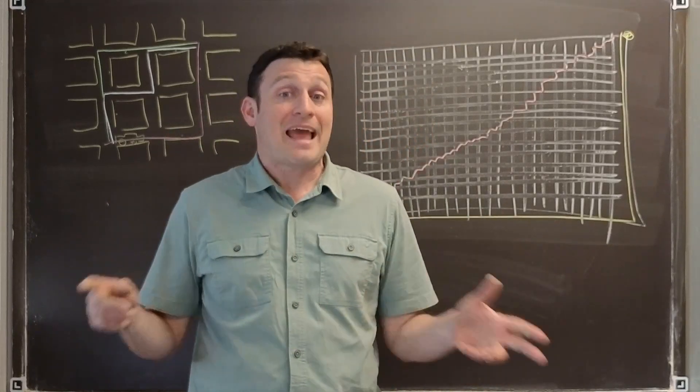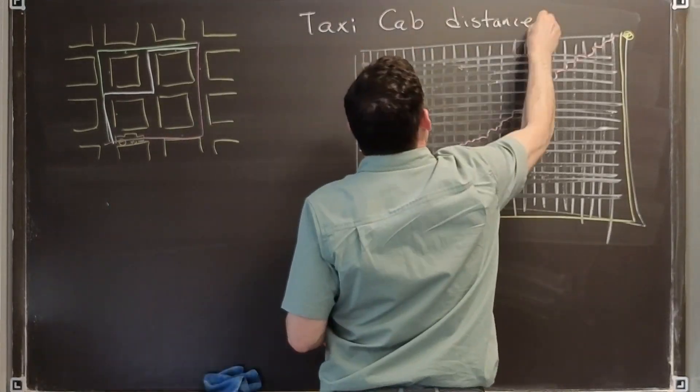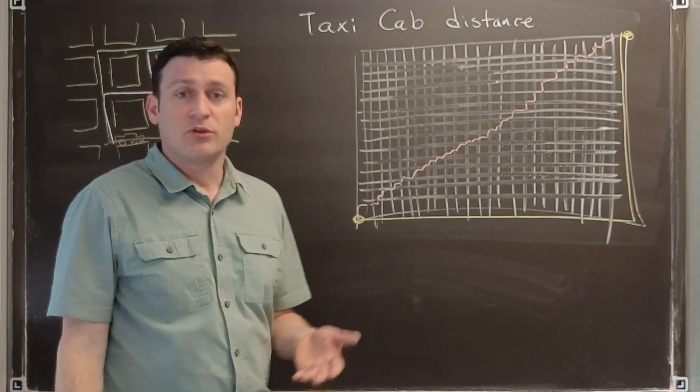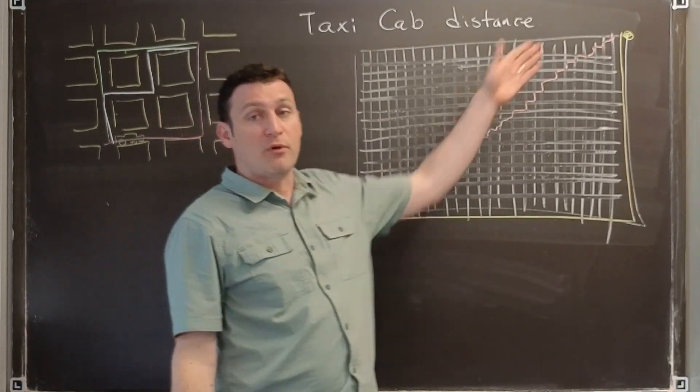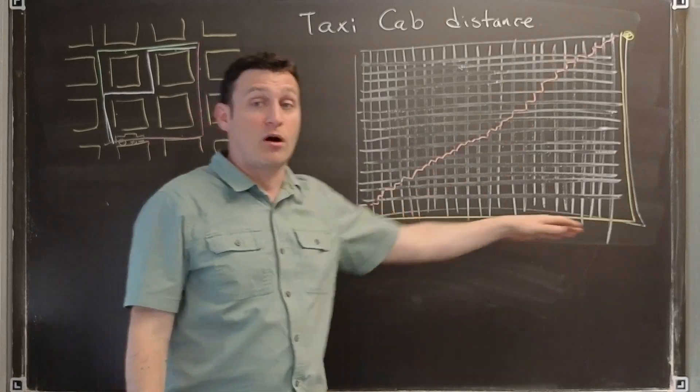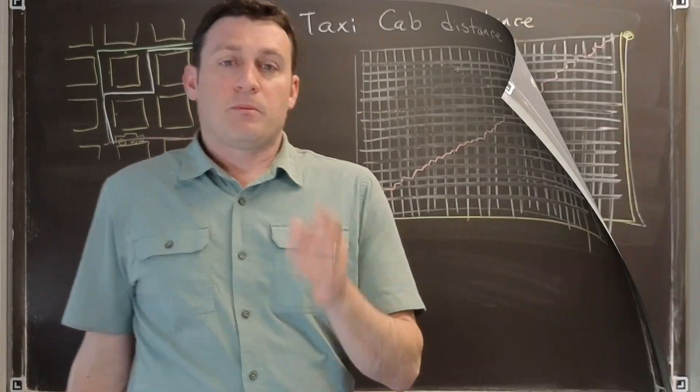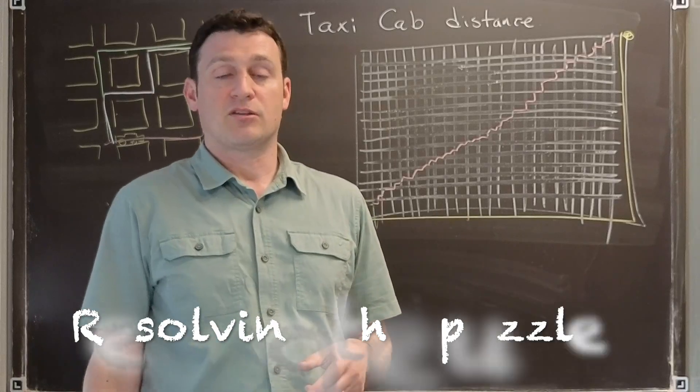For exactly the same reasons that it happened over here. This is what's known as the taxi cab distance. And yet, something must be wrong. Surely it's much easier to walk across a football field on the diagonal than it is to walk around the sides. What's going on here?